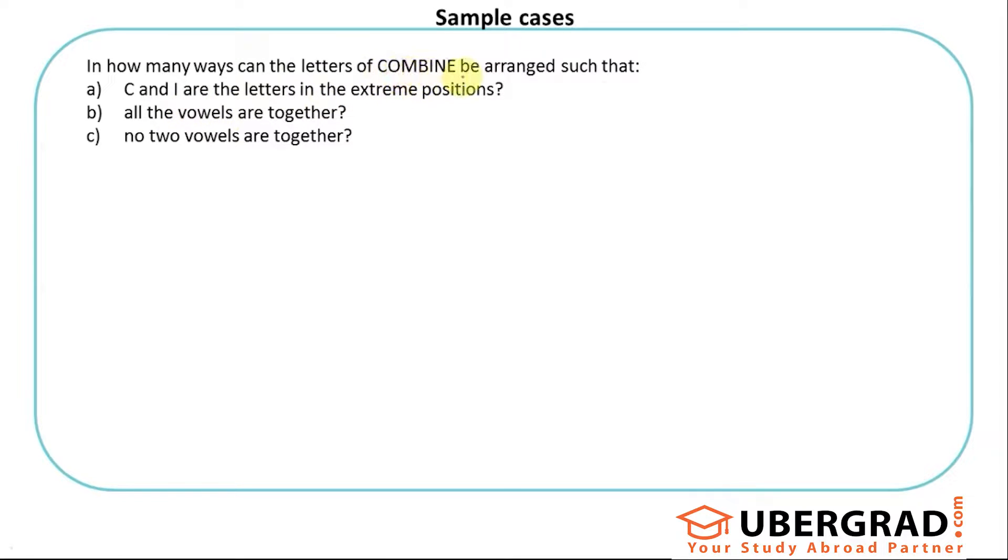If you see this, none of the letters are repeating. C O M B I N E, all the letters are occurring once. So how many letters do I have? 1, 2, 3, 4, 5, 6, 7. So 7 letters.